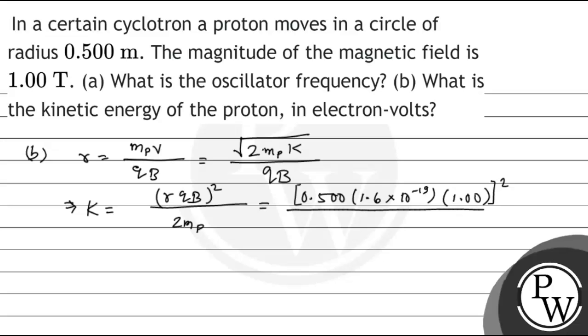...divided by 2 times mass of proton 1.67×10^-27 kg. Since we need the answer in electron-volts, we divide by 1.6×10^-19 joules per electron-volt.